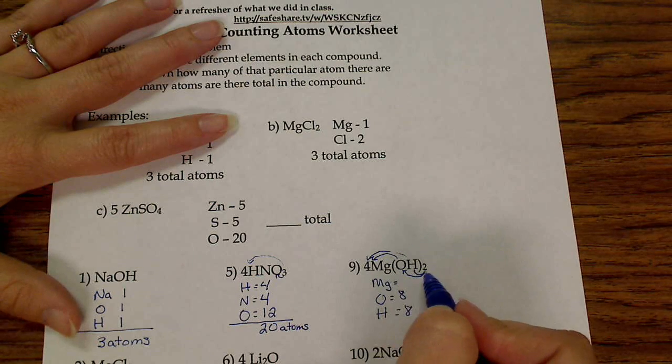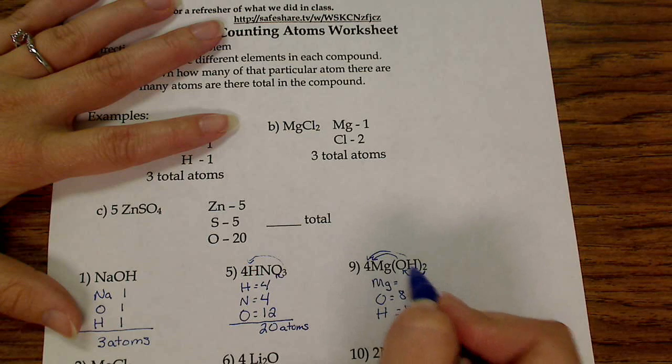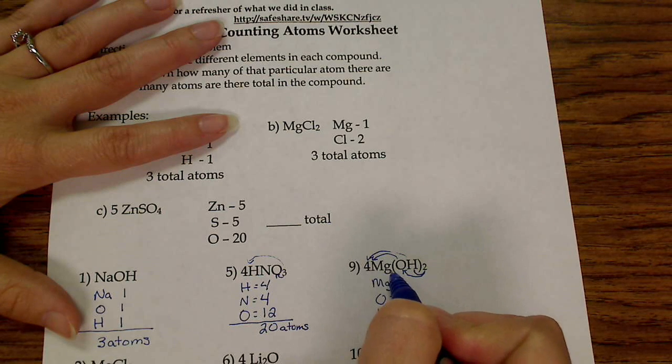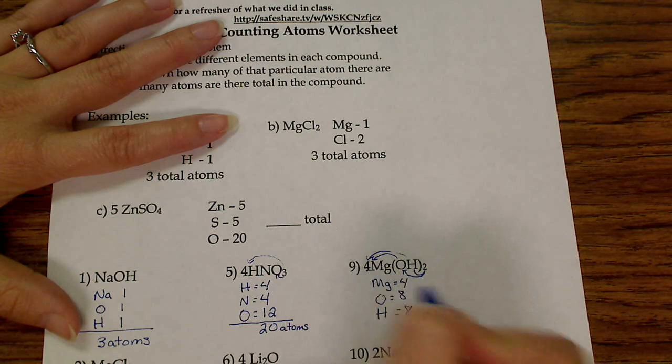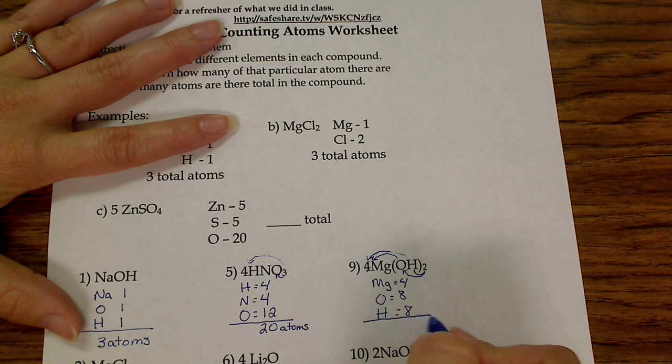And then this subscript only goes to what's in the parentheses here. So this magnesium does not have a subscript, so it's only one. But we multiply it by the four in the beginning, so there's four magnesiums.